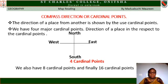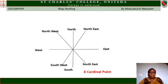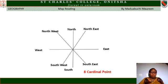We also have 8 cardinal points and finally 16 cardinal points. The 8 cardinal points are North, South, East, and West. Between North and East you have Northeast, between South and West you have Southwest, and between North and West you have Northwest.